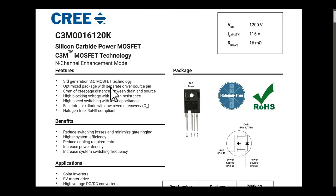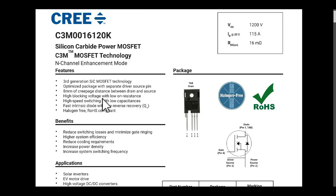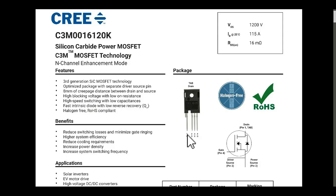One more important thing: you can see the 8 mm creepage distance between drain and source, which is very important. You do not need to put any slot in your PCB because this 8 mm distance is sufficient. It has high blocking voltage with low on-resistance, high speed switching with low capacitance, and a fast intrinsic diode with low reverse recovery time. This is a 4-pin device — not 3-pin — with one drain pin, two source pins, and one gate pin.